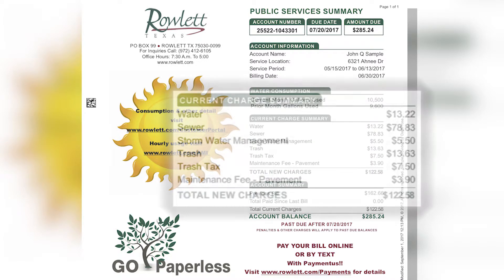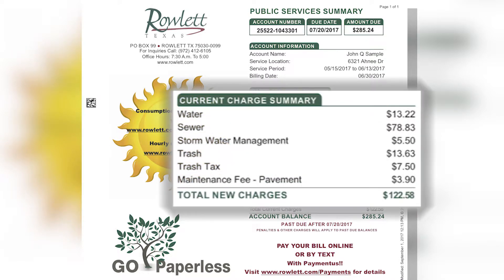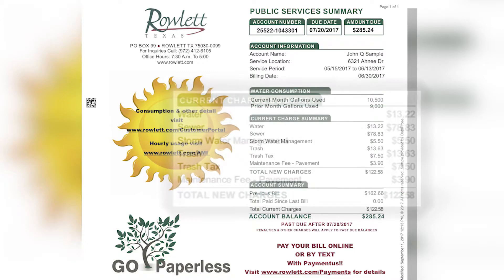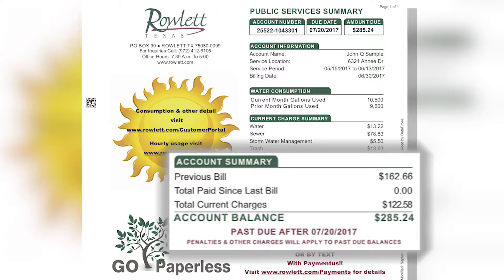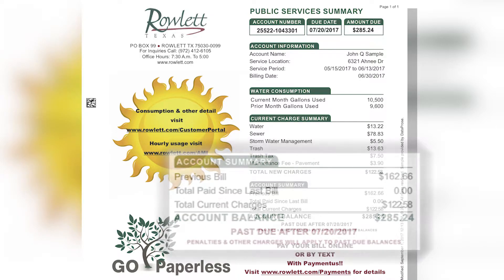The current charge summary field consists of a summary of all current charges for the most recent billing period. Amounts due can be found in the account summary section, with the total amount due for current and past amounts.